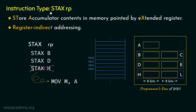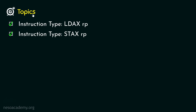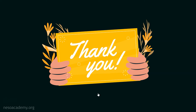That was all about the instruction type STAX rp. Remember, STAX stands for Store Accumulator Contents in Memory Pointed by Extended Register, that is the register pair. In this session, we covered the instruction types LDAX rp and STAX rp. The first one loads the accumulator with the contents of the memory pointed by the register pair; the second stores the accumulator content into the memory location pointed by the register pair. In the next session, we are going to learn about two more instructions of the data transfer instruction group. Thank you all for watching.